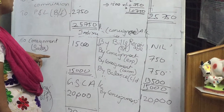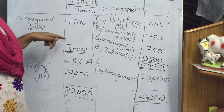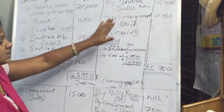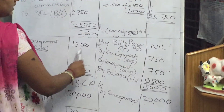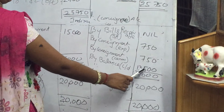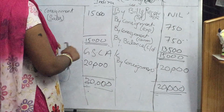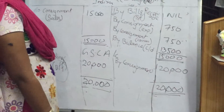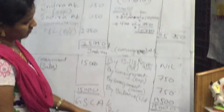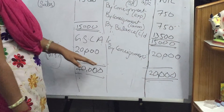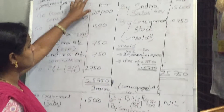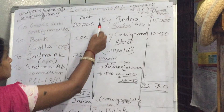You should not take consignment stock in the Indra account because it will come only in the consignment account credit side. So 15,000 minus 750 gives balance carried down. Both sides total 15,000. For goods sent on consignment account, the balance on the debit side is transferred to the credit side from the consignment account — by consignment 20,000. The same balance is then transferred to trading account: 20,000.